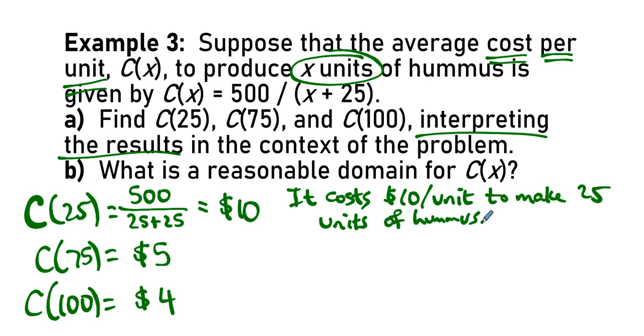It costs $10 per unit to make 25 units of hummus. And similarly for the others. It costs $5 per unit to make 75 units of hummus. It costs $4 per unit to make 100 units of hummus. This is fairly standard, that as the number of units goes up, the cost per unit goes down. Why does that make sense? Because overhead is usually fixed.